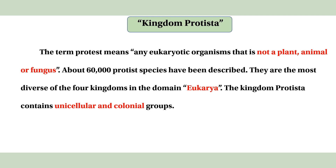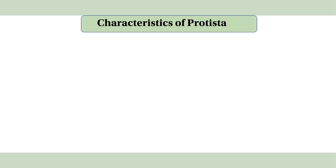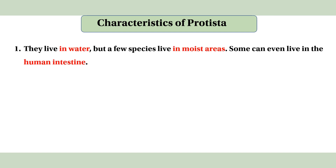The kingdom Protista contains unicellular and colonial groups. They live in water, but a few species live in moist areas, and some can even live in the human intestine.